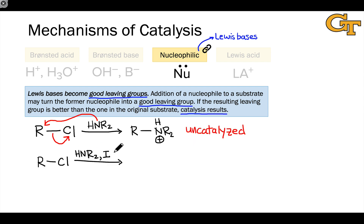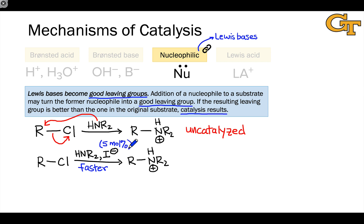Remarkably, when we use these same conditions with a little bit of iodide anion added, we get the same product, but the reaction occurs much more quickly. It's important to note that the iodide is not added in stoichiometric amounts — maybe something like 5 mole percent. So if we use one mole of the alkyl chloride, we've only got 0.05 moles of iodide in the reaction mixture. It's a catalyst, used in substoichiometric amounts, and it remains in the reaction mixture from beginning to end. Iodide is a terrible Brønsted base, so this doesn't look like Brønsted-based catalysis.